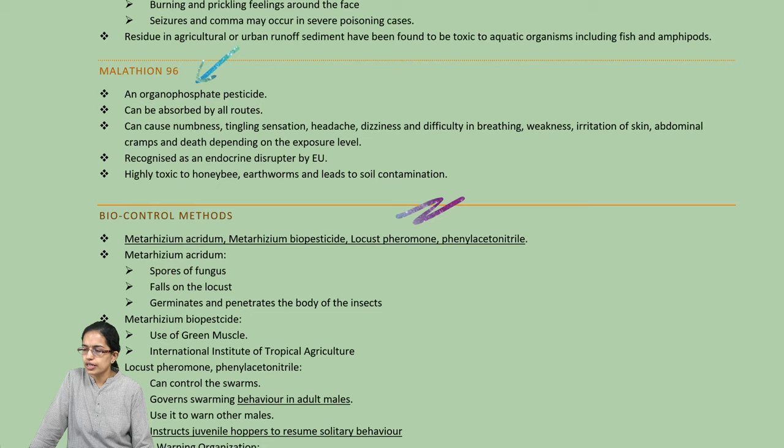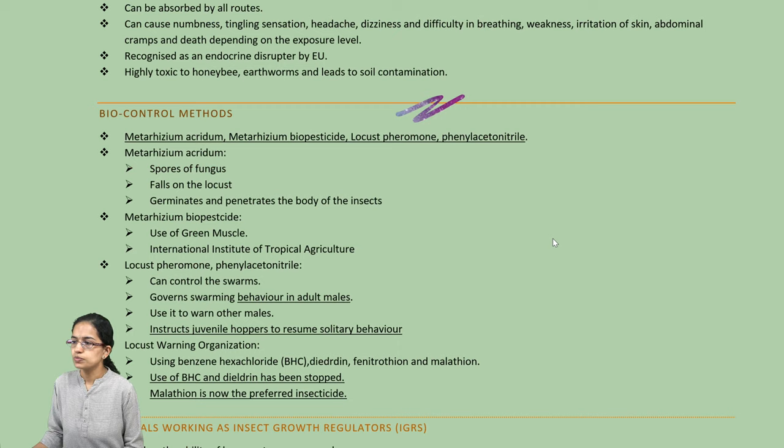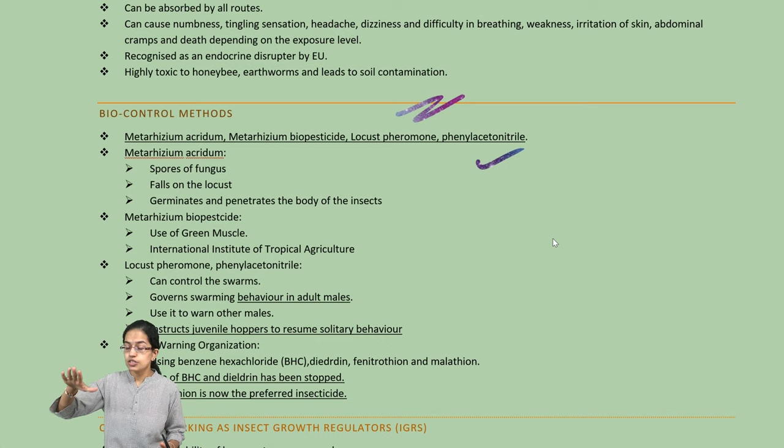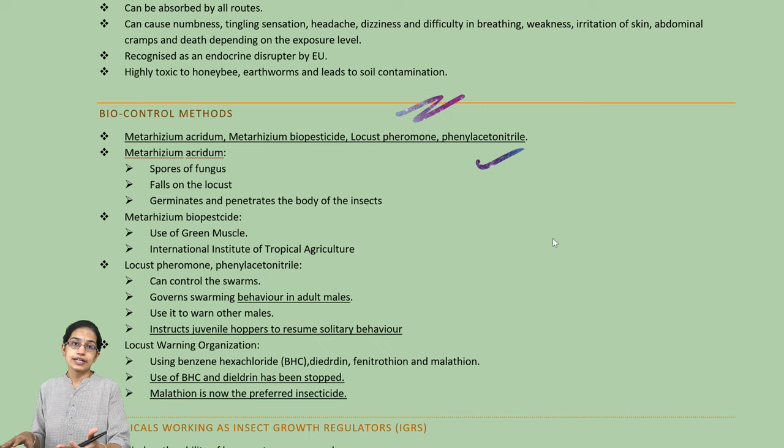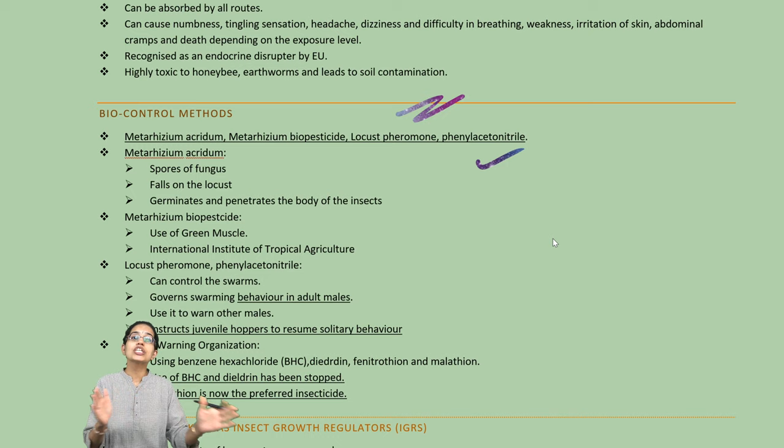What are the biocontrol methods? Biocontrol includes firstly the locust pheromones that are released — phenyl acetonitrile. Both of these basically curb the adult swarms and lead to reduced behavior for adult males. However, they increase solitary tendencies in the young ones, and therefore they break the chain of the locust swarm.